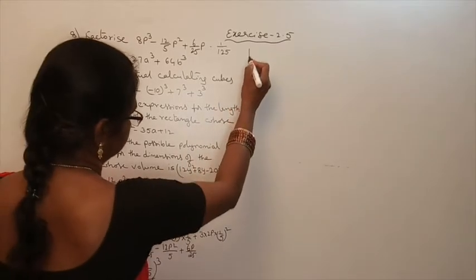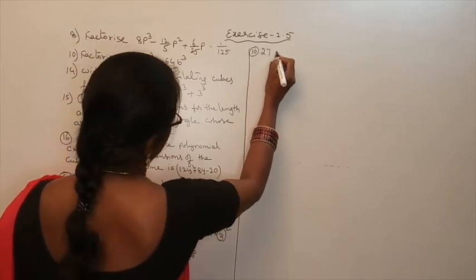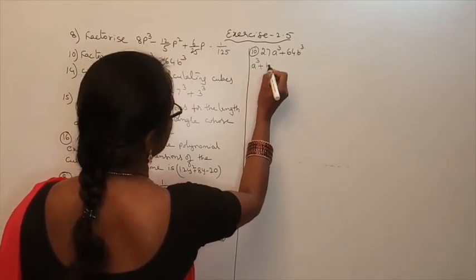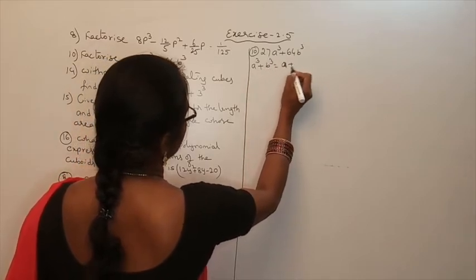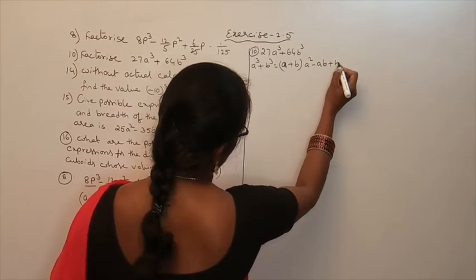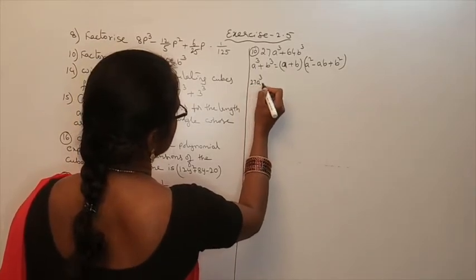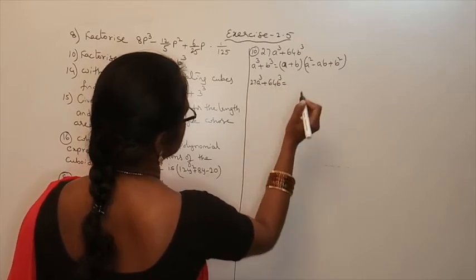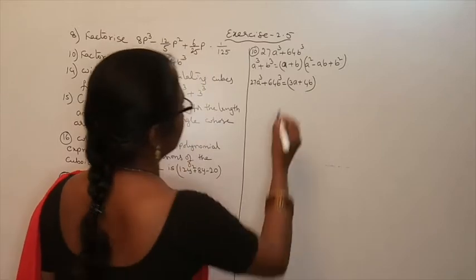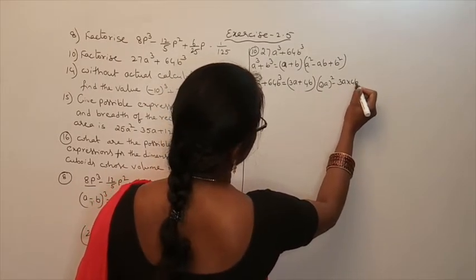Next, the second problem: factorize 27a³ plus 64b³. The formula to use is a³ plus b³ equals (a plus b)(a² minus ab plus b²). So 27a³ plus 64b³, where 27a³ means a equals 3a, is equal to (3a plus 4b)(3a² minus 3a times 4b plus 4b²).